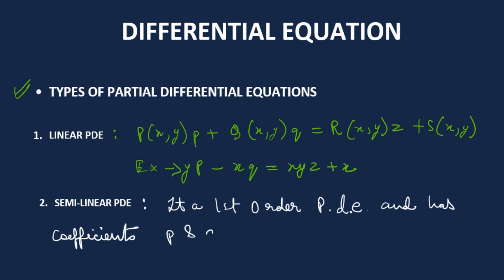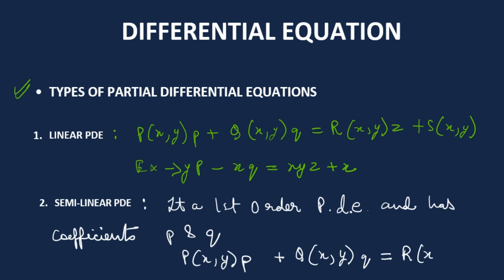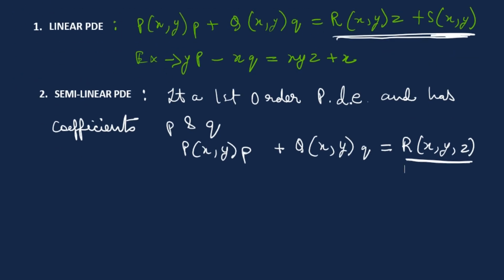The semi-linear partial differential equation has coefficients P and Q, and it looks like: P(x,y)·p + Q(x,y)·q = R(x,y,z). The key difference from the linear PDE is that here you do not have the S(x,y) term that appears in the linear form.